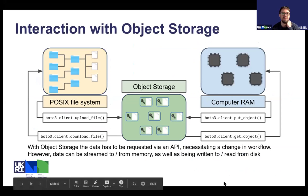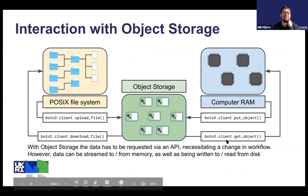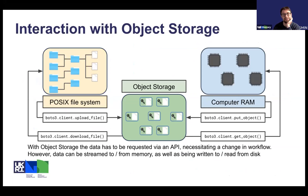To interact with an object store there are two ways: you can either upload and download your objects to a file system, which relies on you having a file system and is not the most efficient use of an object store; or you can stream in and out of RAM, which is the preferred method and uses all the performance properties of the object store much more efficiently.